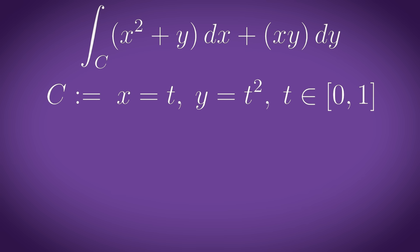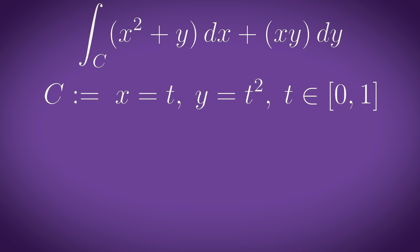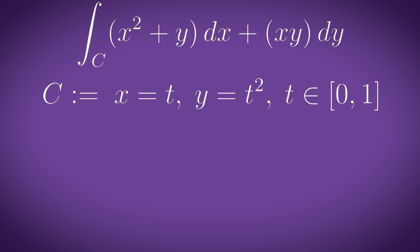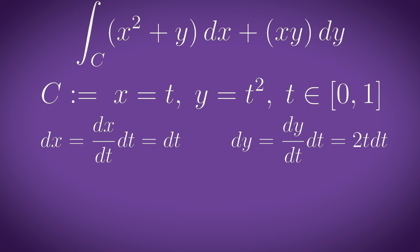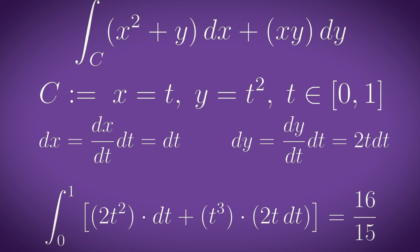For example we define c as x equals t when y equals t squared from t equals zero to one and to find the result of this line integral we just substitute the x and y. Differentiate to find dx and dy and substitute those in and evaluate the integral like normal.